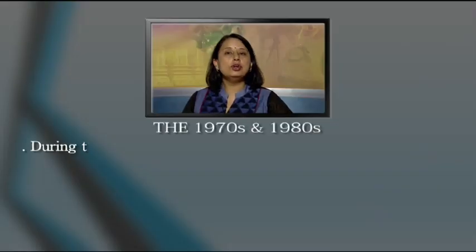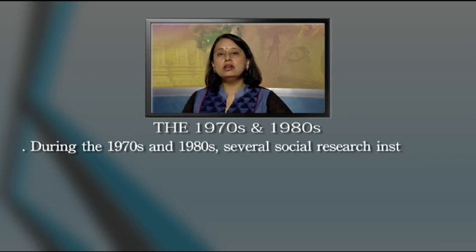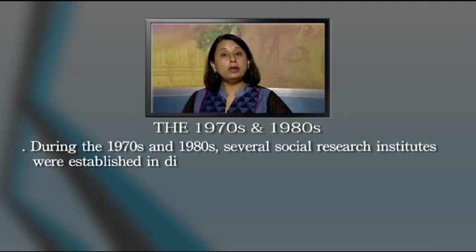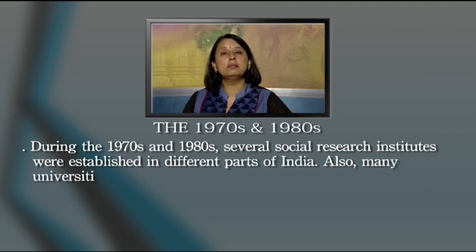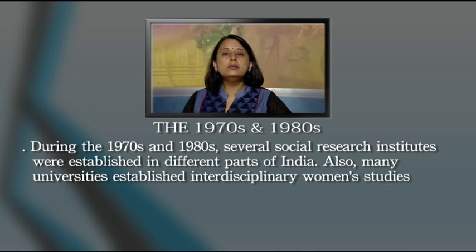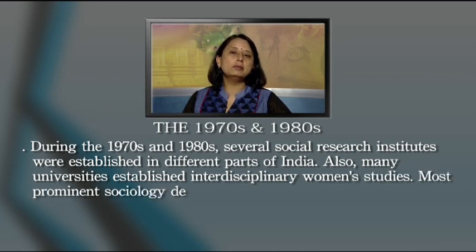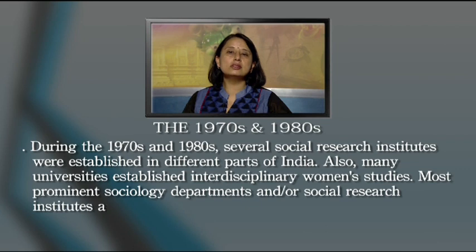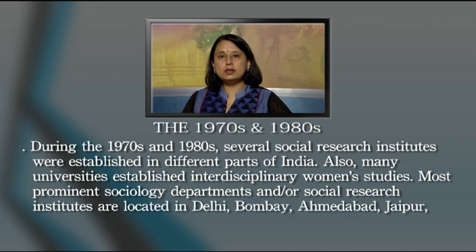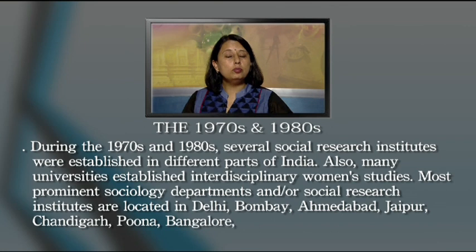With independence, India started its five-year plans with a focus on social development of the masses. During the 1970s and 1980s, several social research institutes were established across India, and many universities started interdisciplinary departments, many focusing on women's studies. The most prominent sociology departments and social research institutions are located in Delhi, Bombay, Ahmedabad, Jaipur, Chandigarh, Pune, Bangalore, Hyderabad, Trivandrum, and Lucknow.